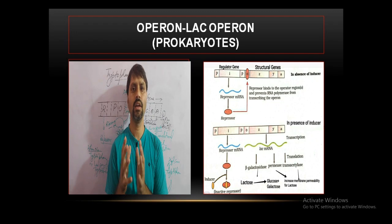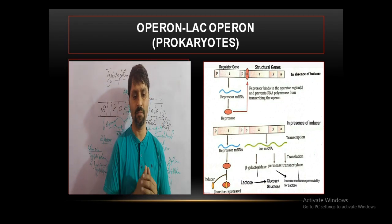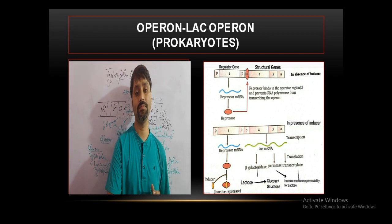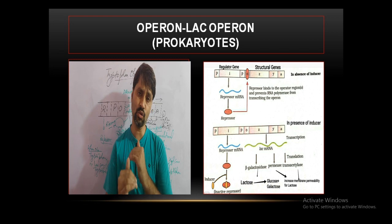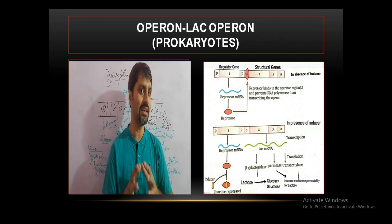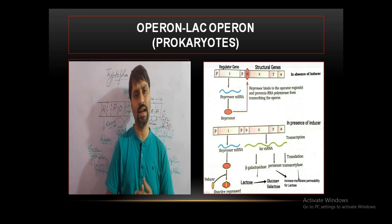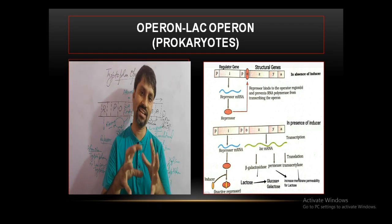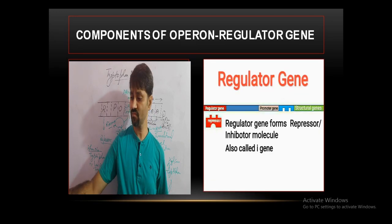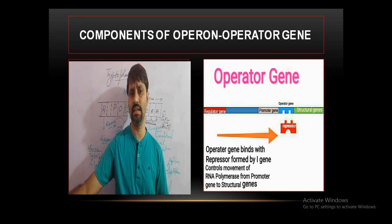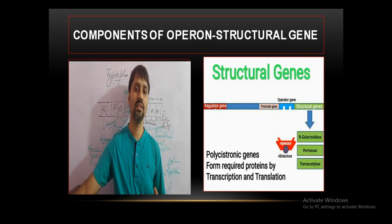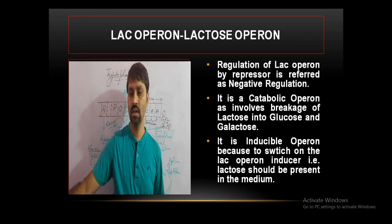In the lac operon, when an inducer — which in this case is lactose, hence the name lac operon — is present, that inducer combines with the repressor produced by the regulator gene. This activates or switches on the operon. By default the operon is switched off. It activates it and carries out catabolism of lactose to glucose, which is used as an energy source by E. coli.